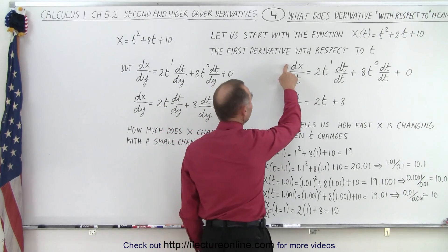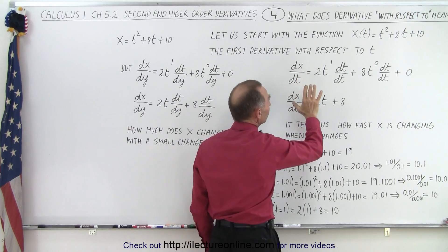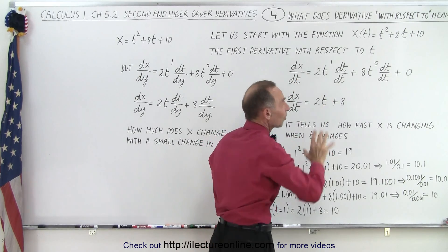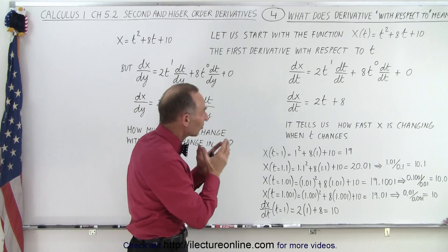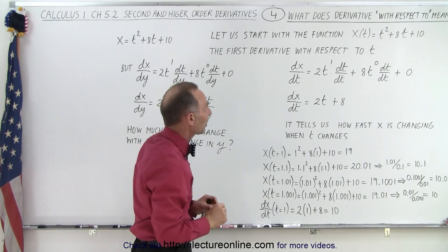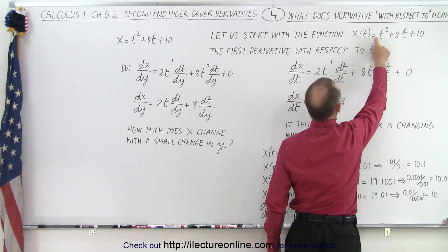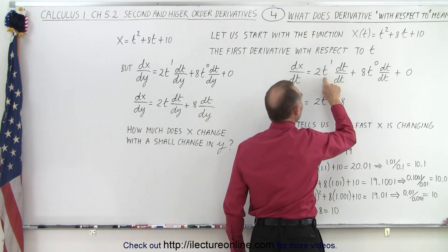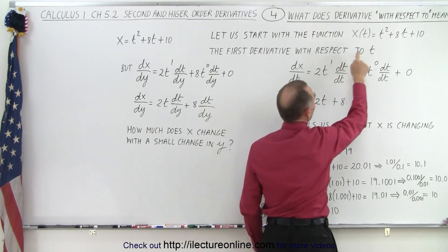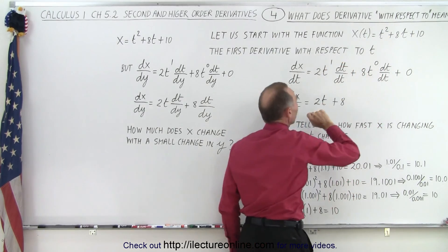We take the derivative of the function x with respect to t. This is something we normally don't write because we use that shortcut method, but this is essentially what's happening. You take the exponent and multiply the constant in front, which is 1, so 1 times 2 gives us 2 times t, and then you subtract 1 from the exponent so 2 minus 1 becomes exponent 1.